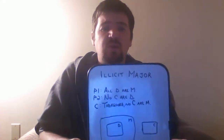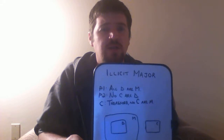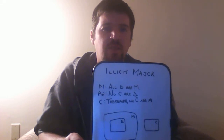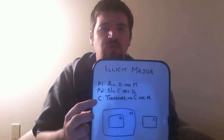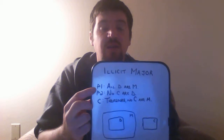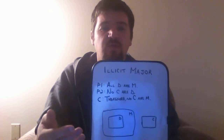The first one I'm going to discuss is called Illicit Major, and it goes like this. Premise 1: all D are M. Premise 2: no C are D. Conclusion: therefore, no C are M. Now you can stick any letters you like in here — I didn't use the ones straight from Wikipedia or any philosophy guide, because I wanted it to fit better with my examples so you could follow along.